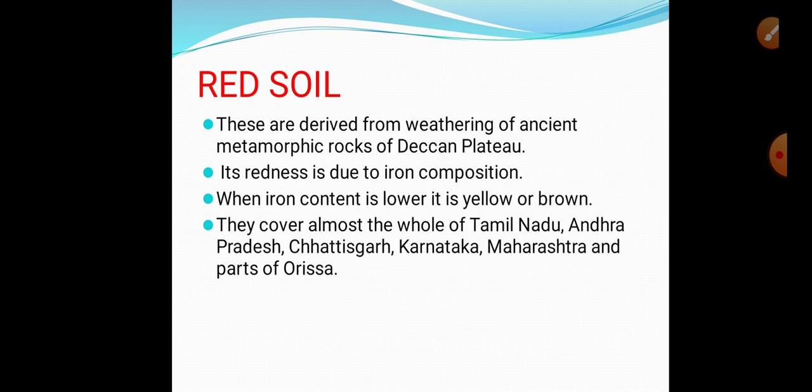The third type of soil is red soil. These are derived from the weathering of ancient metamorphic rocks of the Deccan plateau. As we know from Class 8, there are types of rocks — igneous rocks, sedimentary rocks, and metamorphic rocks. When these metamorphic rocks weather and break into pieces, red soil forms. It gets its colour from its iron composition. When iron content is lower, the soil is yellow or brown.